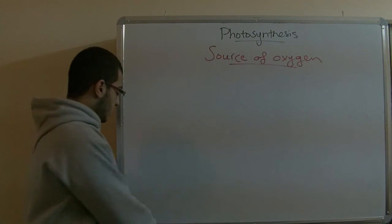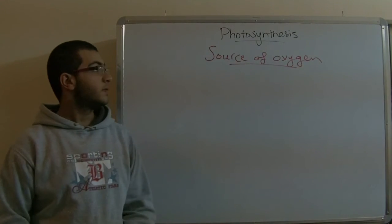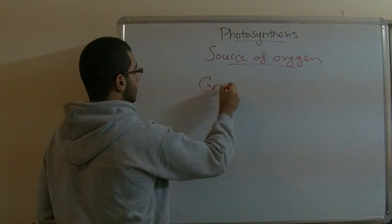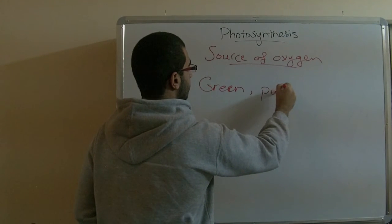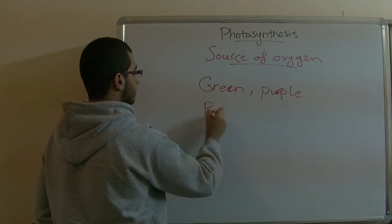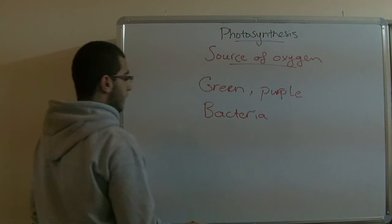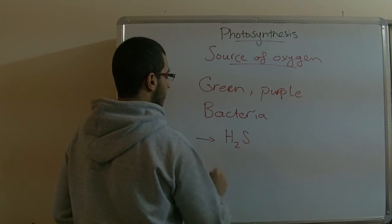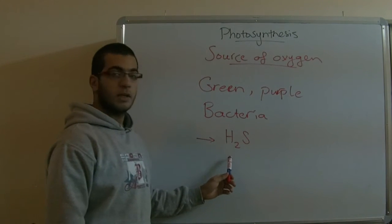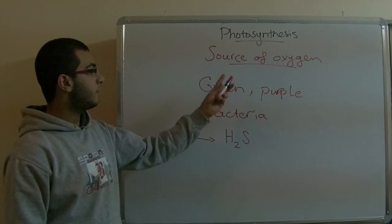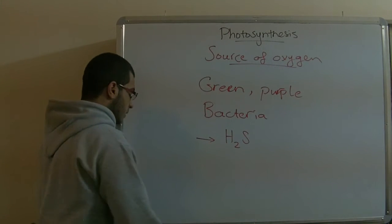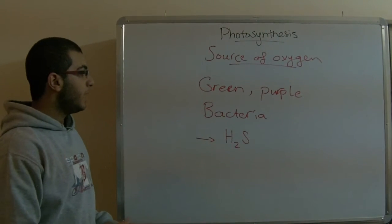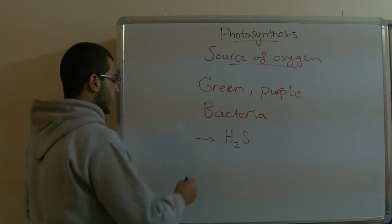We knew that plants are the only autotrophic organisms, but there are some types of green and purple bacteria which live in swamps or ponds where hydrogen sulfide is abundant. These bacteria use hydrogen sulfide instead of water to carry out the photosynthesis process. The organism which carries out photosynthesis must have chlorophyll, so plants have green chlorophyll while those bacteria have bacteriochlorophyll.